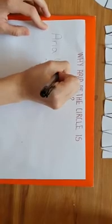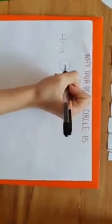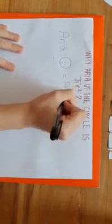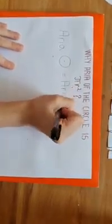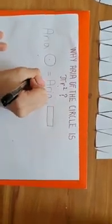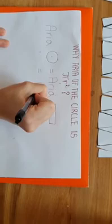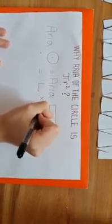Now area of the circle equals area of the rectangle. We know that area of the rectangle is length times breadth.